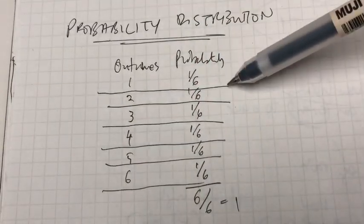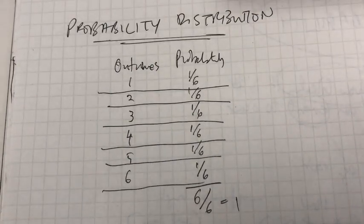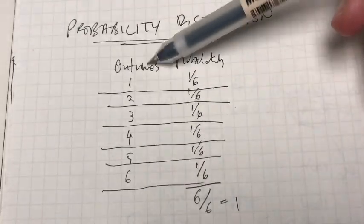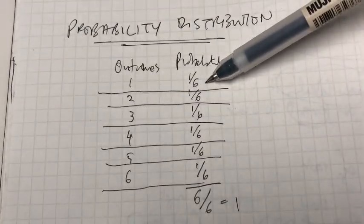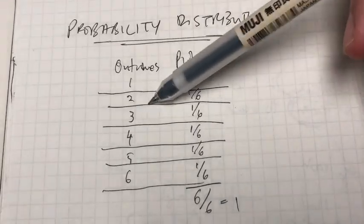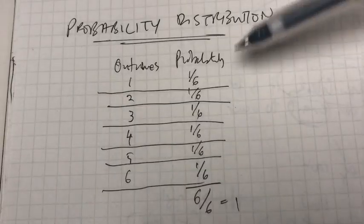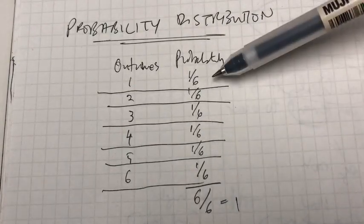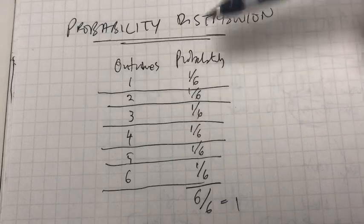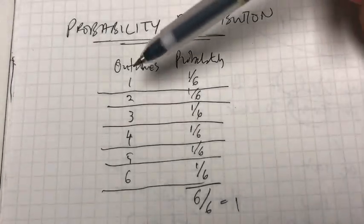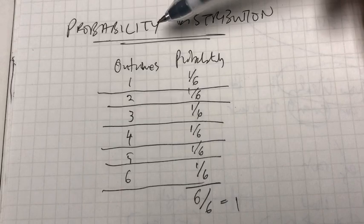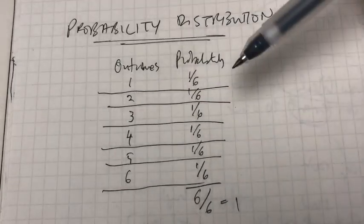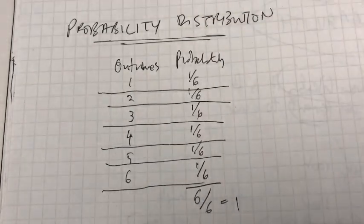This is called a probability distribution. A probability distribution is a list of all of the possible outcomes of an experiment and the probabilities attached to each one of those outcomes. In our example here, the probabilities are equal. But does it always have to be equal? No. It depends on the circumstances — throwing a dice gives equal probabilities, but in the next example, I'll show you the case where the probabilities are not equal.